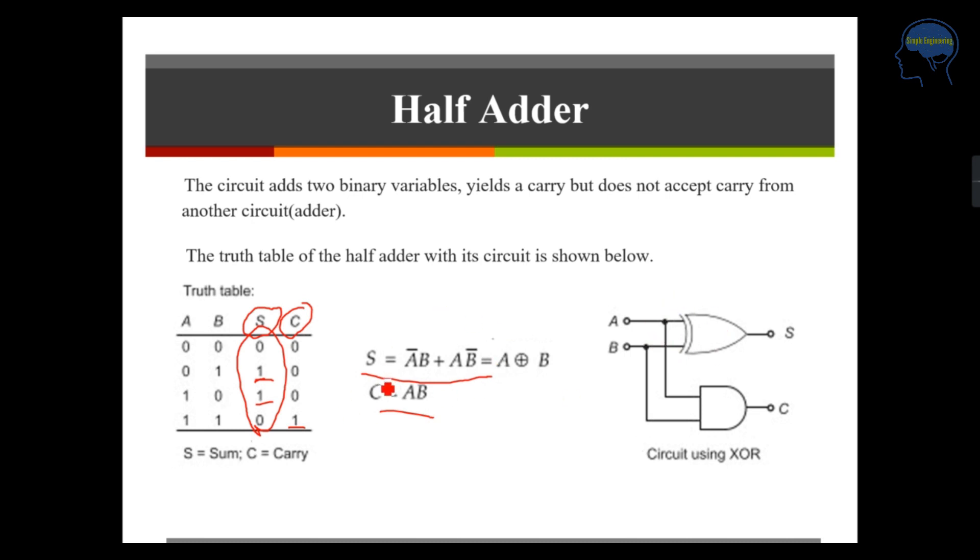S that is your sum is A XOR B and C is your carry which is A into B. A XOR B means you have to implement that by using an XOR gate and C equals AB means which you need an AND gate for the implementation.